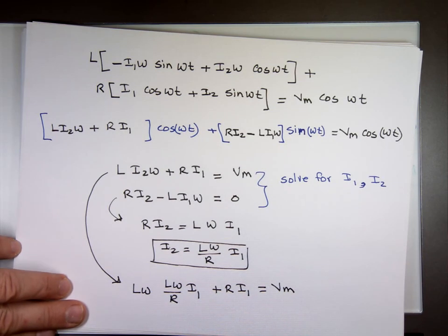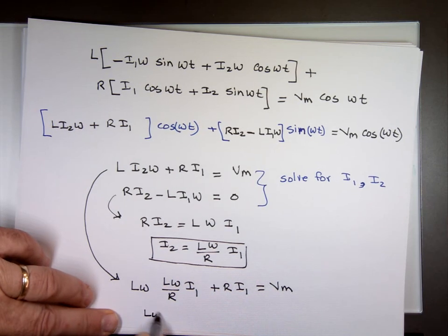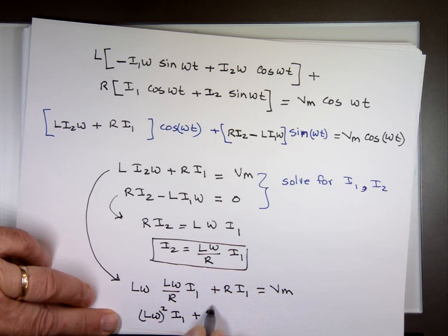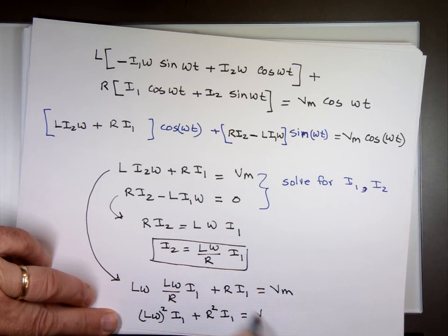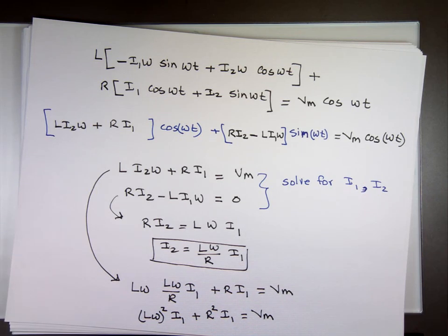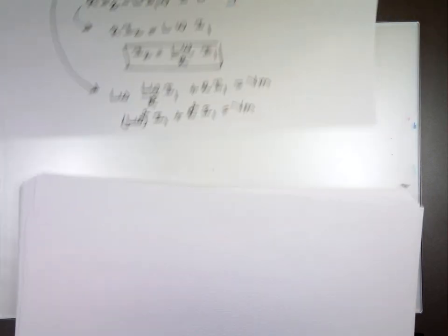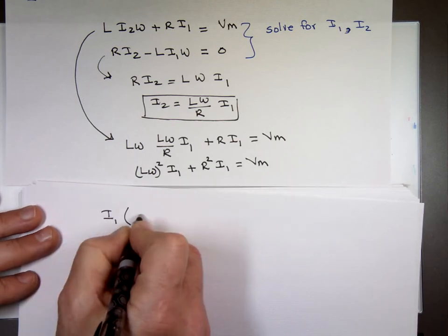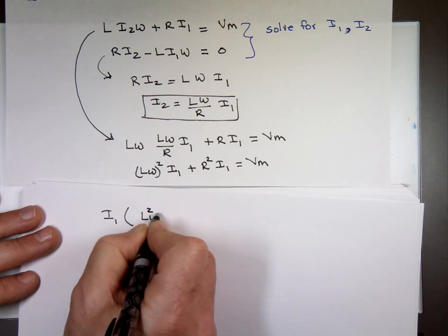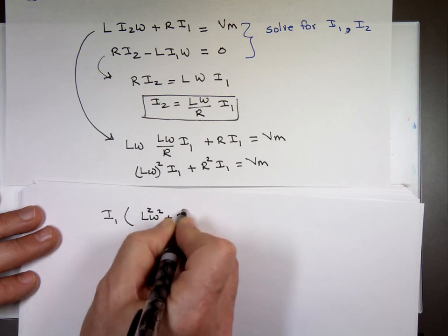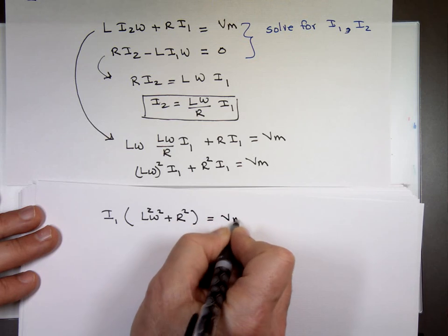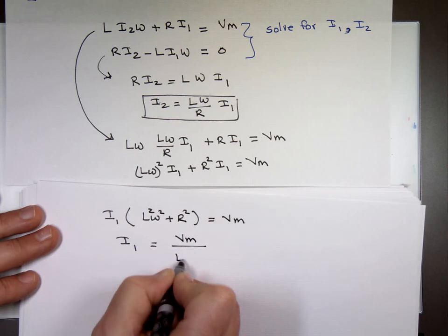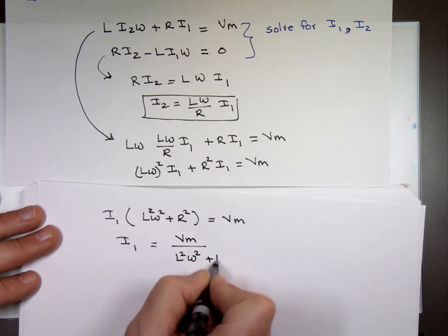Multiply everything by R to clean it. Lω squared I sub 1 plus R squared I sub 1 equals Vm. We can factor I1, not I squared. L squared ω squared plus what? R squared. What's I sub 1? It's Vm over L squared ω squared plus R squared. Now we know what I sub 1 is.